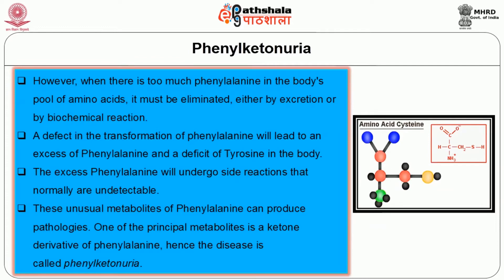However, when there is too much phenylalanine in the body's pool of amino acids, it must be eliminated either by excretion or by biochemical reaction. A defect in the transformation of phenylalanine will lead to an excess of phenylalanine and a deficit of tyrosine in the body. The excess phenylalanine undergoes side reactions that are normally undetectable, producing unusual metabolites that can cause pathologies. One of the principal metabolites is a ketone derivative of phenylalanine — hence the disease is called Phenylketonuria.